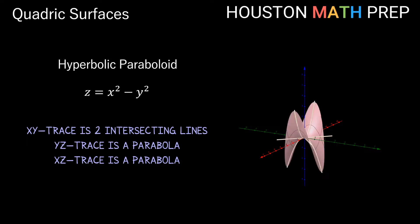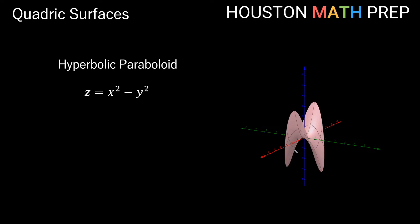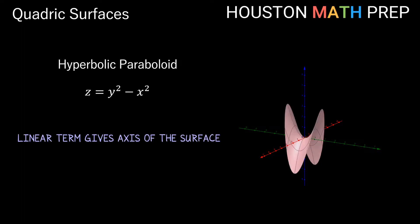Graphing the hyperbolic paraboloid, you can see that traveling in the y direction the origin is at the top of a hill, while traveling in the x direction the origin is the low point in a valley. With the y term positive and x term negative, this is clearly the shape of a saddle — the front and back extend upward from the origin, and the sides travel downward. The linear variable z indicates the direction your head would point riding the saddle. You might also recognize this as the shape of Pringles potato chips.